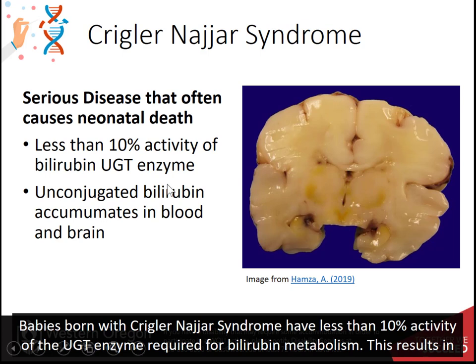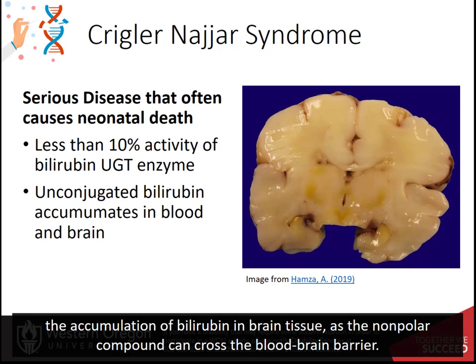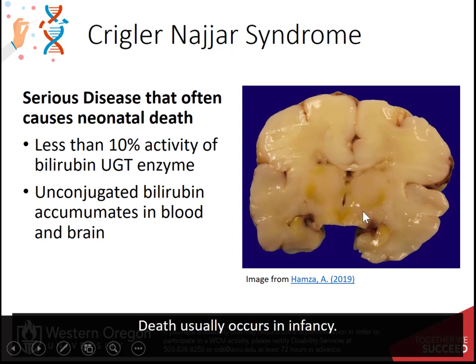Babies born with Crigler-Najjar syndrome have less than 10% activity of the UGT enzyme required for bilirubin metabolism. This results in the accumulation of bilirubin in brain tissue, as the non-polar compound can cross the blood-brain barrier. Death usually occurs in infancy.